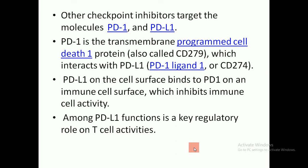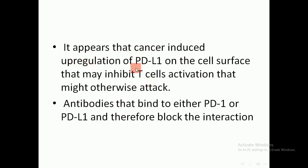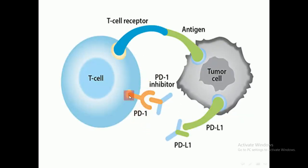Other checkpoint inhibitors target PD-1, the transmembrane programmed cell death protein also called CD-279, which interacts with PD-L1 (CD-274). When PD-L1 on a cell surface binds to PD-1 on an immune cell surface, it inhibits immune cell activity. Among PD-L1's functions is a key regulatory role on T cell activities. Cancer appears to induce upregulation of PD-L1 on cell surfaces, inhibiting T cell activation. Antibodies can bind to either PD-1 or PD-L1 to block this interaction.